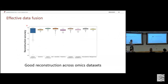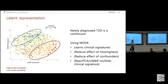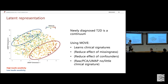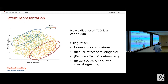The model can reconstruct all the different data types well. Looking at the UMAP of the latent space, we can see an over-representation of individuals with low insulin sensitivity in one region and high insulin sensitivity in another. Standard methods like PCA or UMAP on the raw data find nothing. So the VAE can learn clinically relevant structure. It's also robust to missing data and to confounders like age, sex, and geographic location.